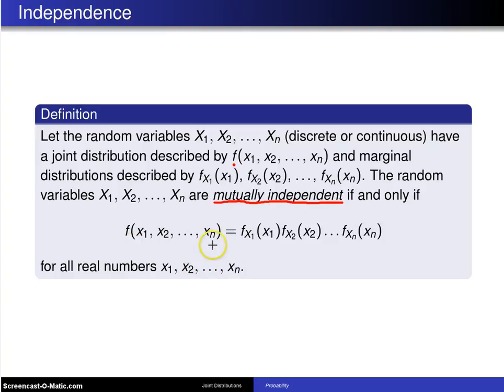So again, if the joint distribution is the product of the marginals, then they are mutually independent.